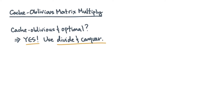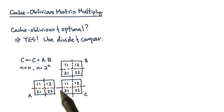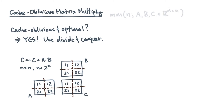Let's assume for simplicity that the matrices are n by n, where n is an integer power of two. The algorithm first partitions the matrices into two-by-two submatrices, then performs eight recursive matrix multiplies to update the two-by-two C block. Here's the pseudocode algorithm.